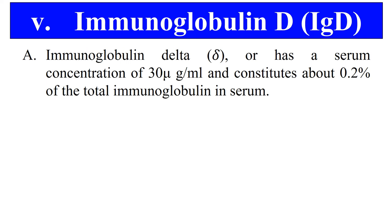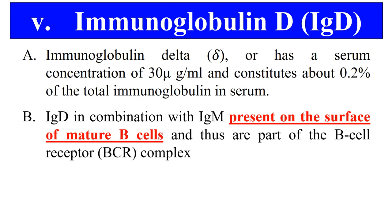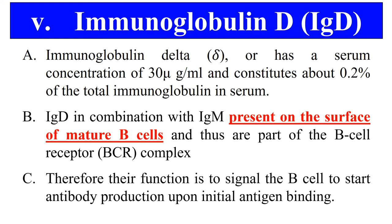Finally, the last class is IgD, that is immunoglobulin D. It is present in very low amounts in the serum — generally about 0.2% of total immunoglobulin. It is present on the surface of mature B cells as part of the B cell receptor. Its main function is to signal the B cell to start antibody production upon interaction with antigen — when a B cell interacts with an antigen through IgD, it signals the B cell to produce more antibodies.